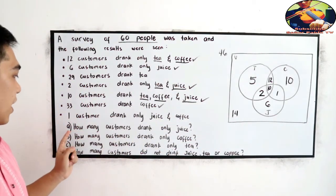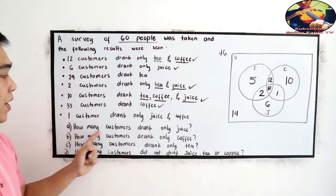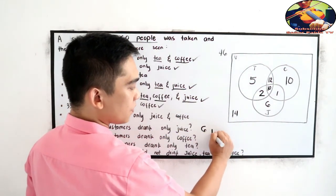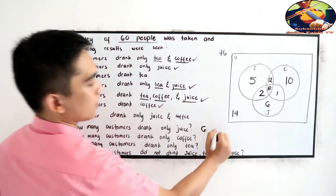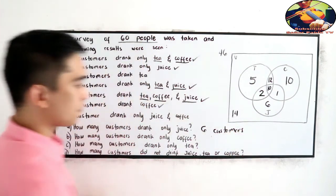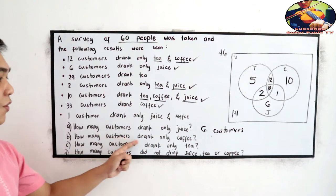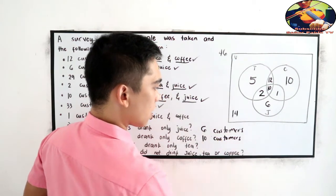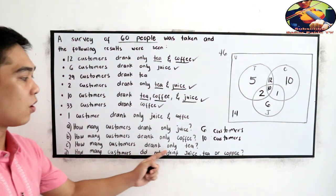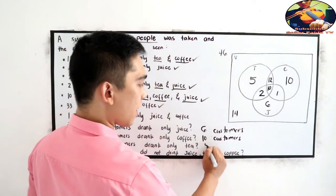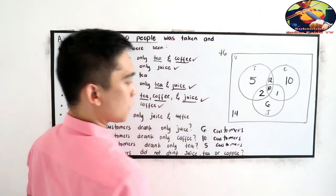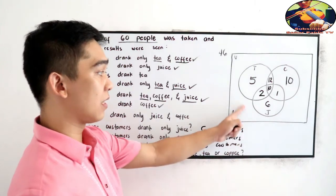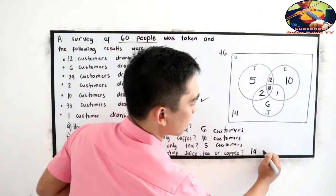Let's answer questions A, B, C, and D. A: how many customers drank only juice? There are 6 customers. B: how many customers drank only coffee? So 10. C: how many customers drank only tea? There are 5. D: how many customers did not drink juice, tea, or coffee? There are 14 customers.